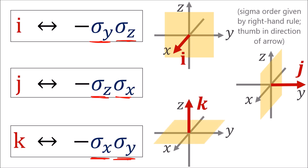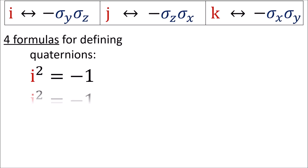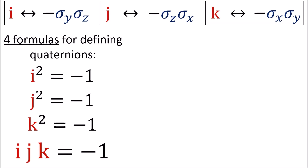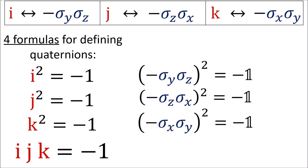To prove this equivalence, we need to establish the fundamental properties of quaternions — that each of i, j, k squares to negative 1, and that i times j times k equals negative 1. We've already shown that these pairs of sigma matrices square to the negative identity, and the fact that we've added a negative sign in front doesn't change this result, since negative 1 squares to plus 1.